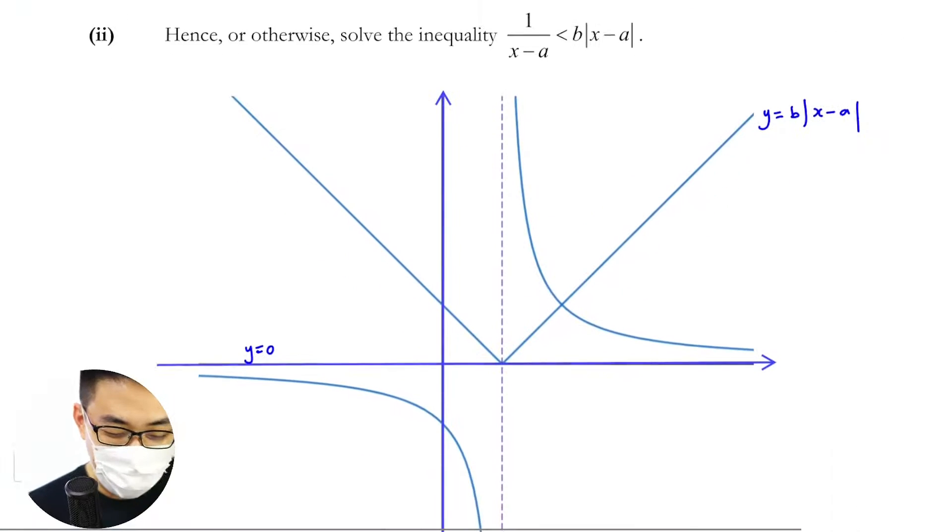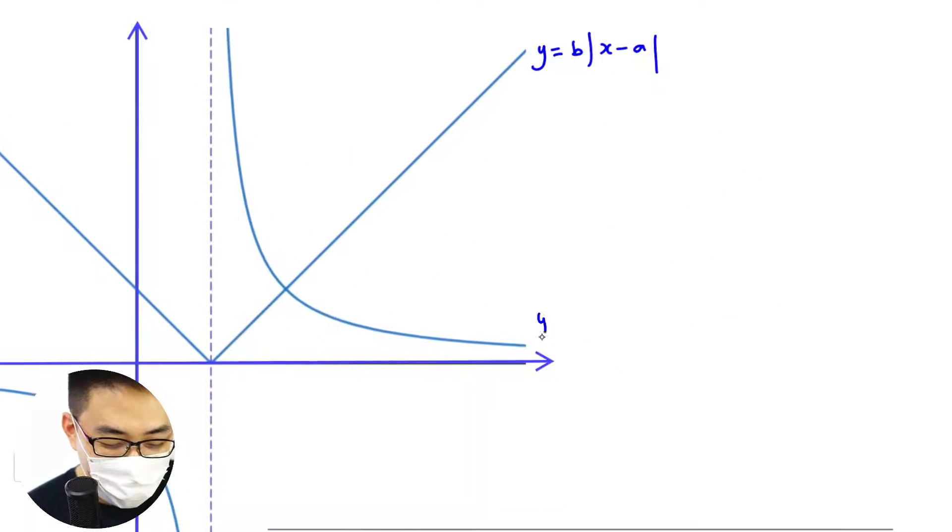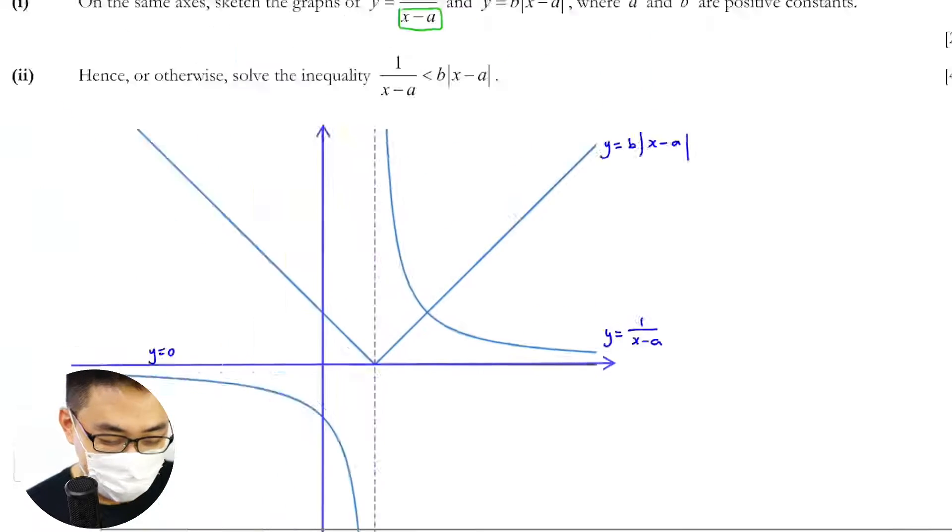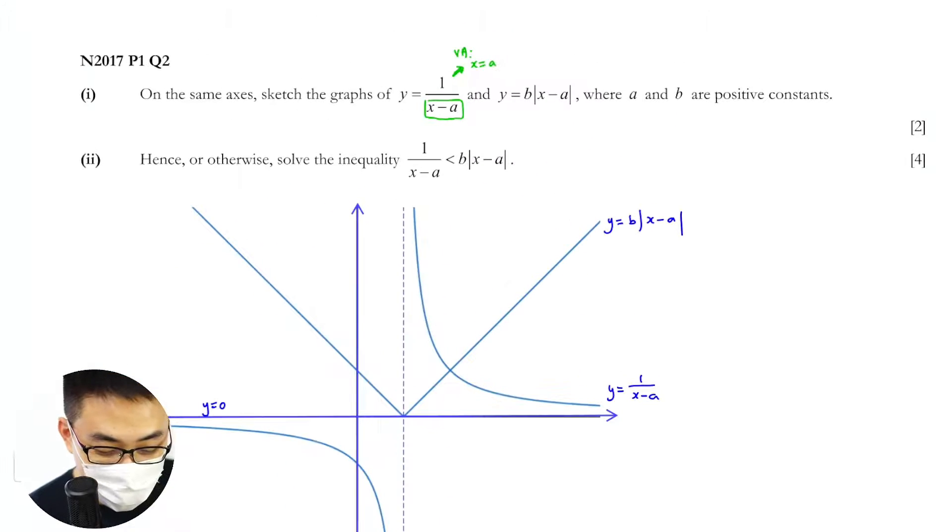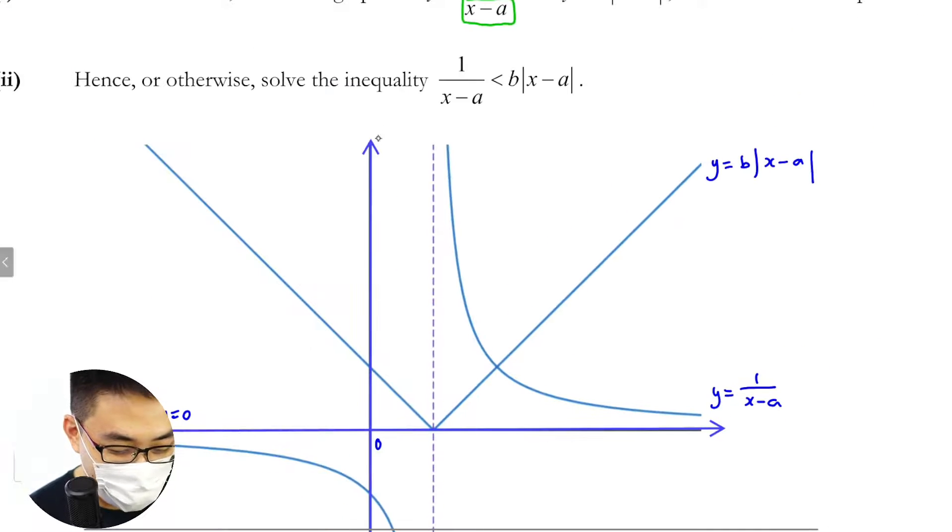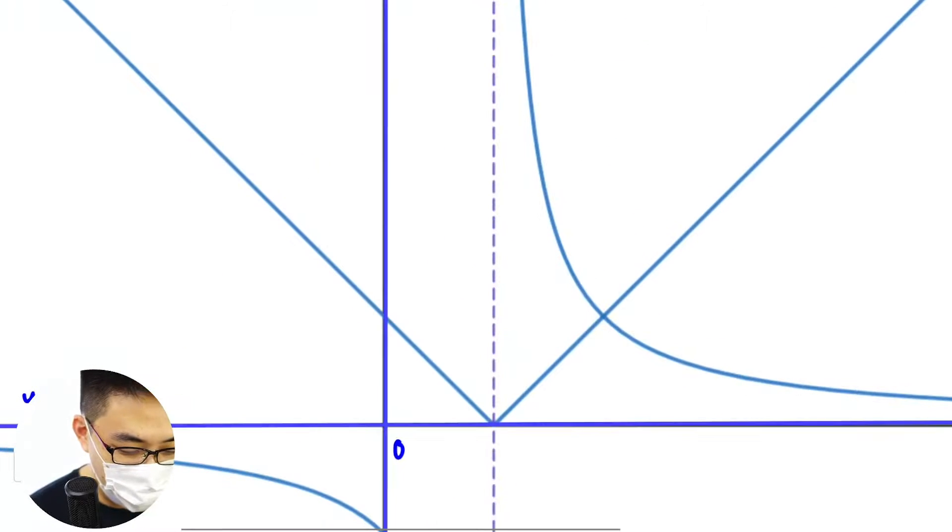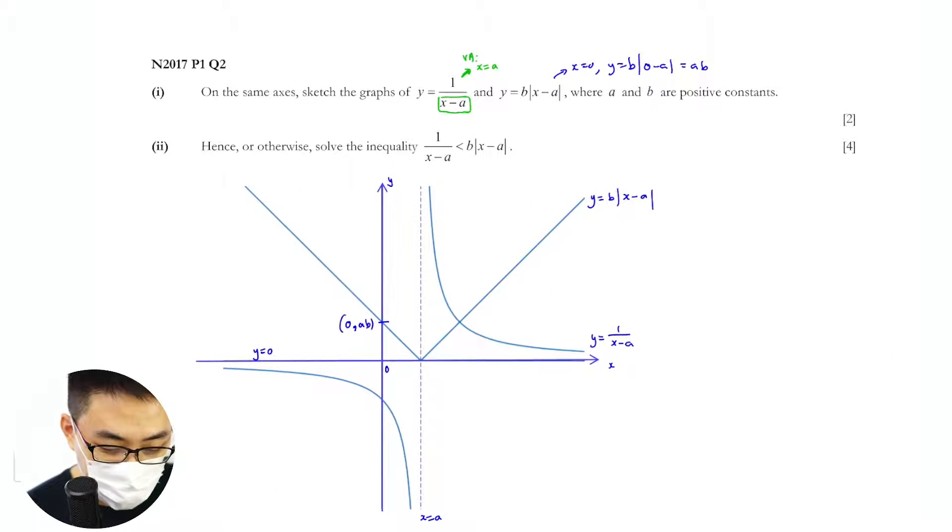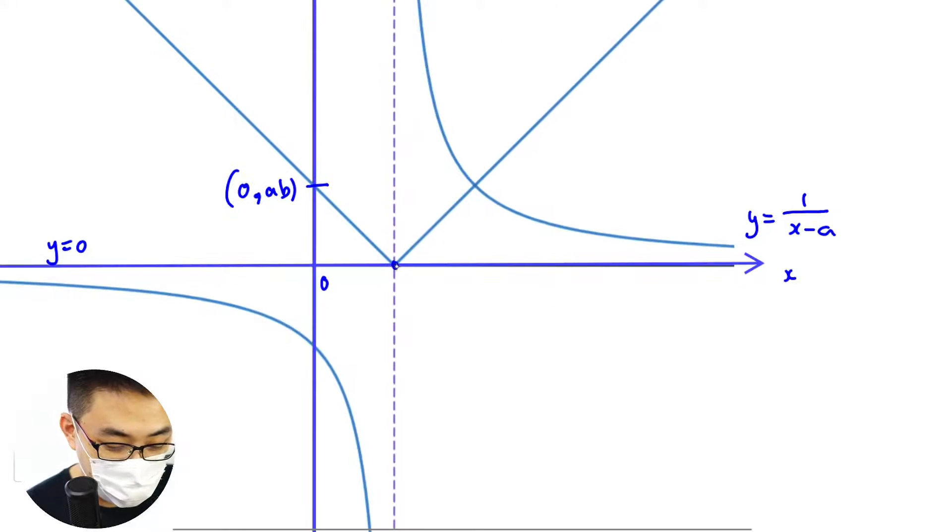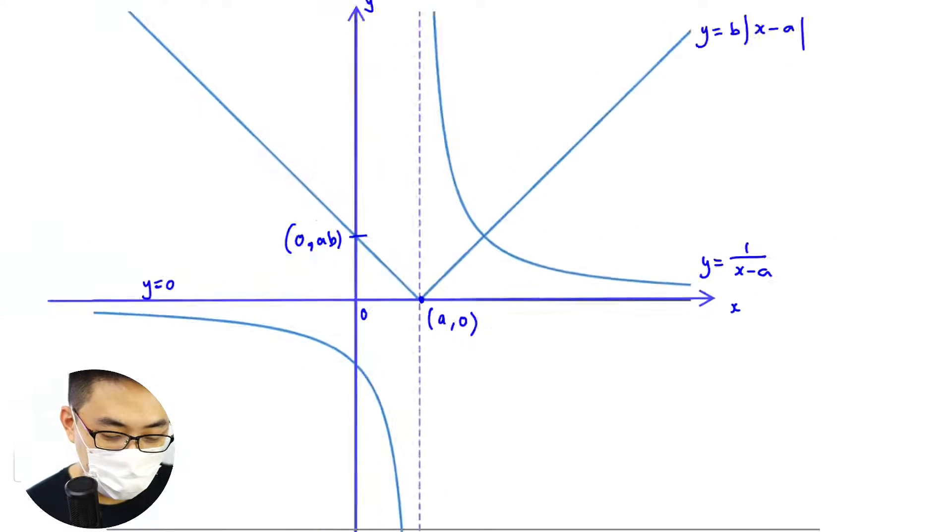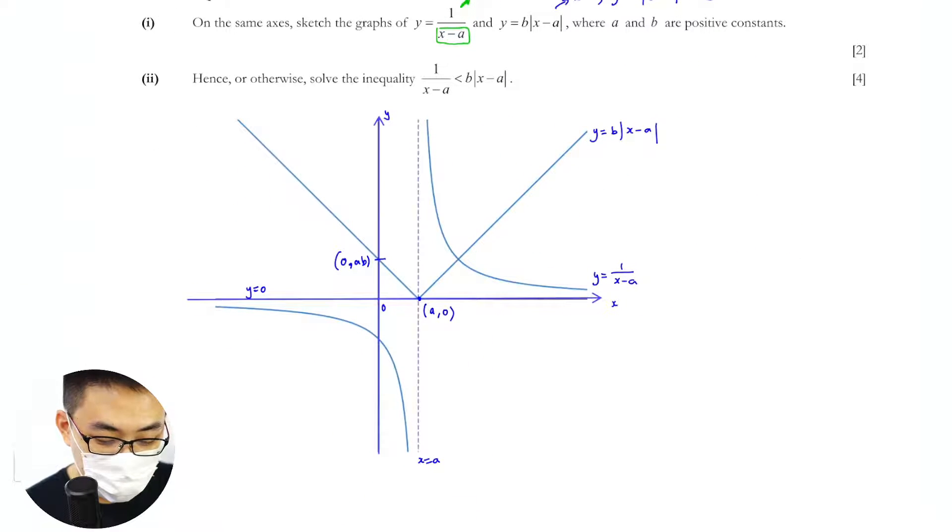But of course as Singaporean students we usually just write everything out because we are fearful. So label the rest down. In this case y equals b times modulus x, so when x is zero, y will be b times modulus of zero minus a, so this is just ab. Label this as zero comma ab. The asymptote is y equals zero, and this would be a comma zero.